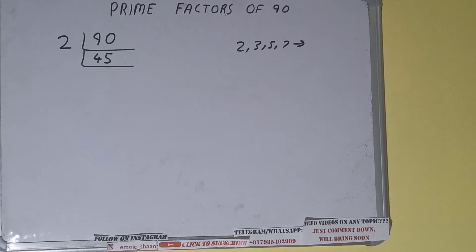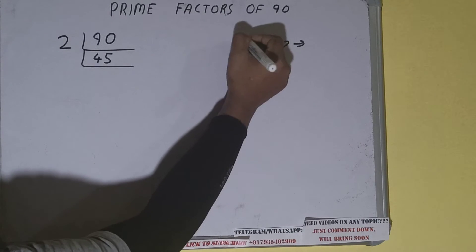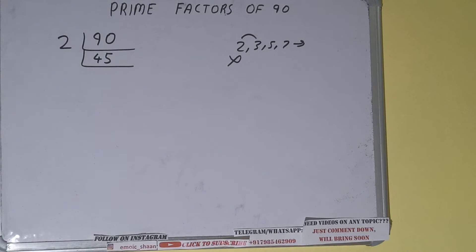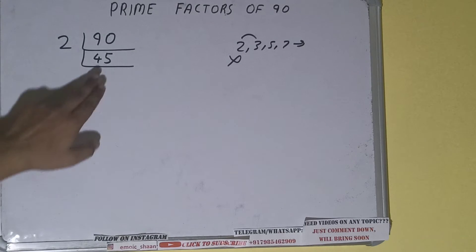Is 45 further divisible by two? The answer is no because the number is odd, so we'll be going to the next lowest prime number, that is three. Is the number 45 divisible by three? Yes, it is divisible.